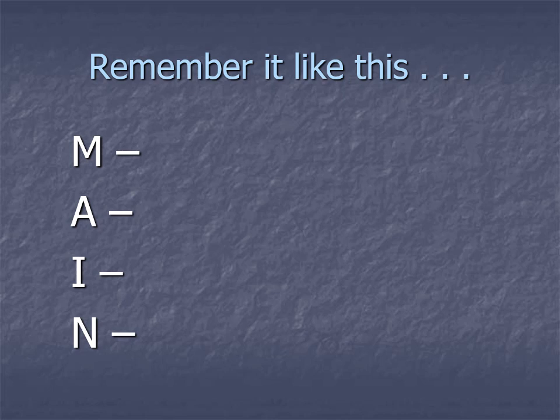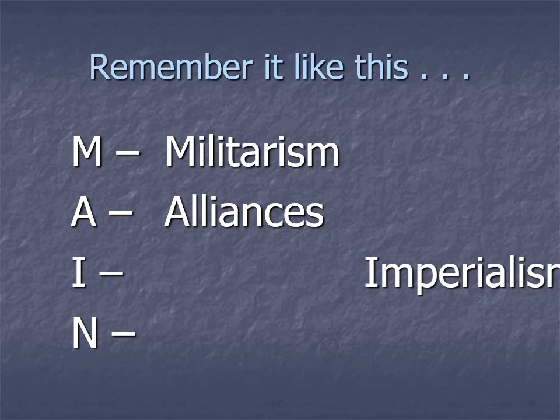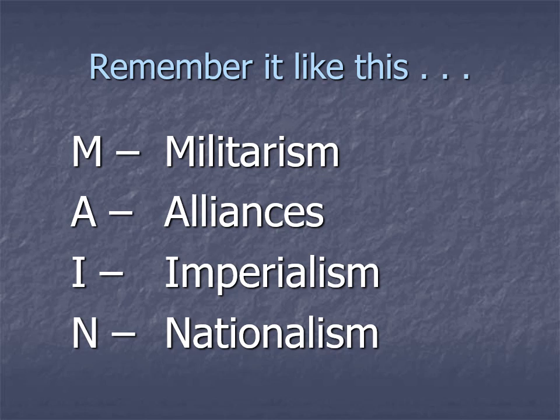So those are our four causes of World War I. The easy way to remember them is the MAIN causes — M-A-I-N: Militarism, Alliances, Imperialism, and Nationalism. As long as you spell the word 'main' correctly, that should be a hint to what you're trying to remember. These create an atmosphere of tension: big militaries, alliance systems, imperialism where countries are fighting over the same territories, and nationalism giving a sense of extreme pride. Europe is a tense place to be.